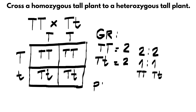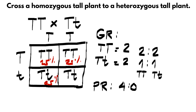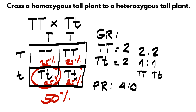For our phenotypic ratio, based on the idea that phenotype is the observable characteristics or traits of an organism, all offspring in our Punnett square are tall — two homozygous tall and two heterozygous tall — so the phenotypic ratio is 4 to 0. Going back to the second question, what is the probability that the offspring can have a heterozygous tall plant? Each box represents 25%, so adding 25% and another 25% gives us 50%. That is the probability, the chance, that we can have a heterozygous tall plant.